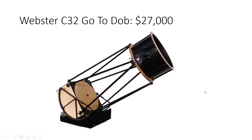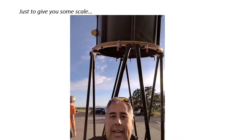Here's a dream scope — a 32-inch Dobsonian with full motorization, go-to, and Nexus digital setting circles. It costs as much as a modest car or small SUV, but the views through it can be life-changing.